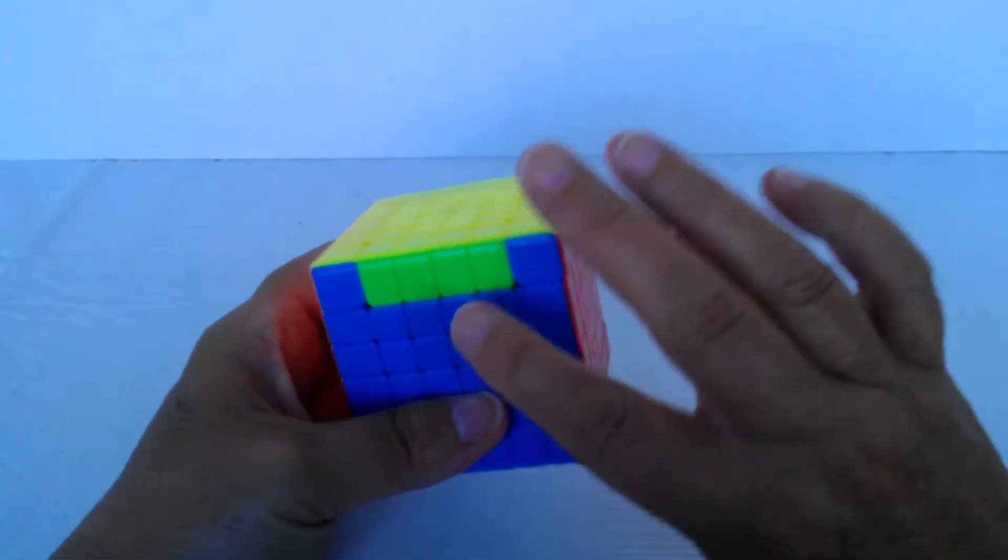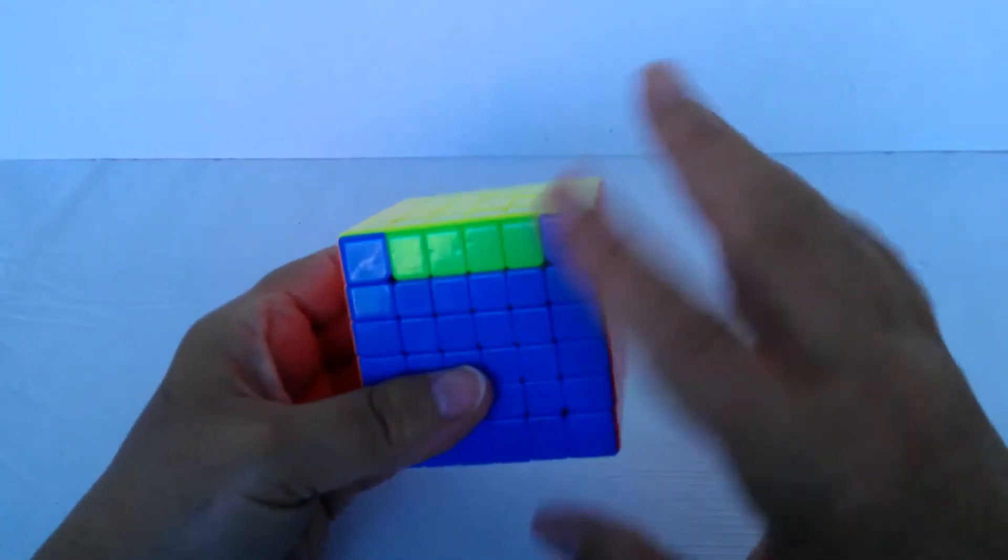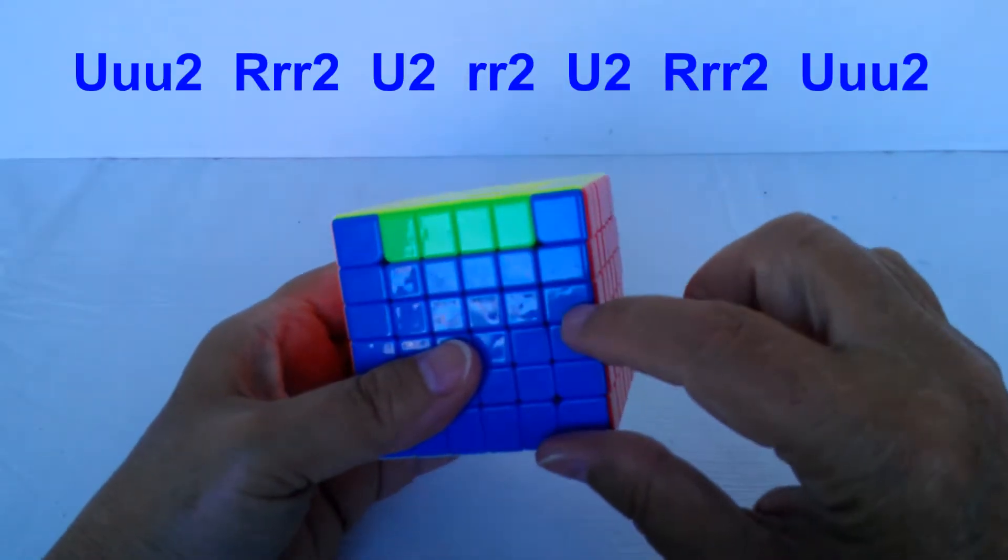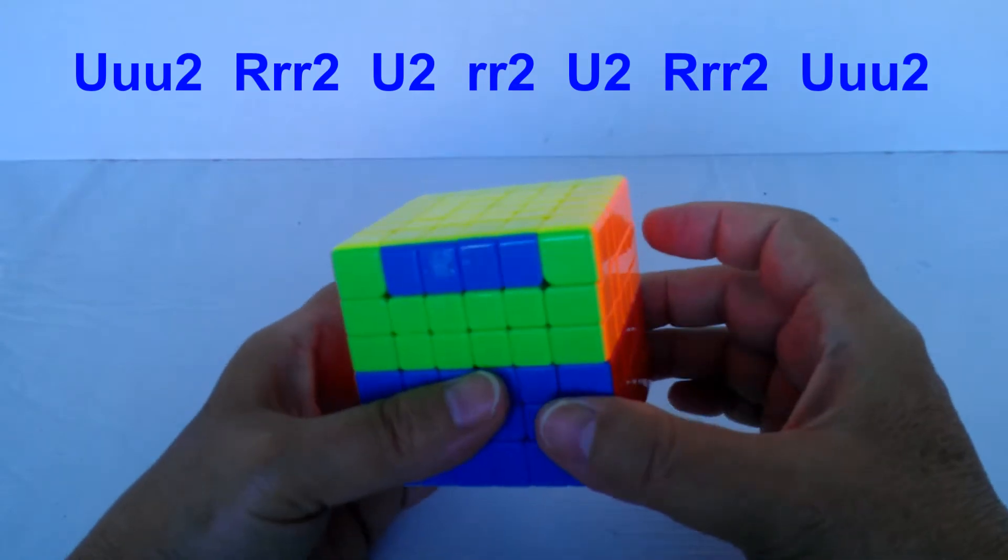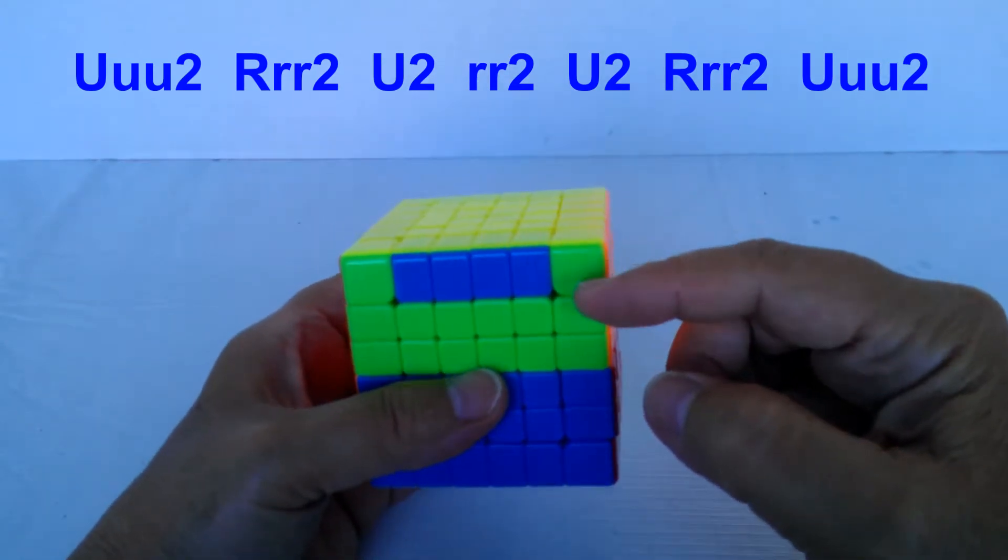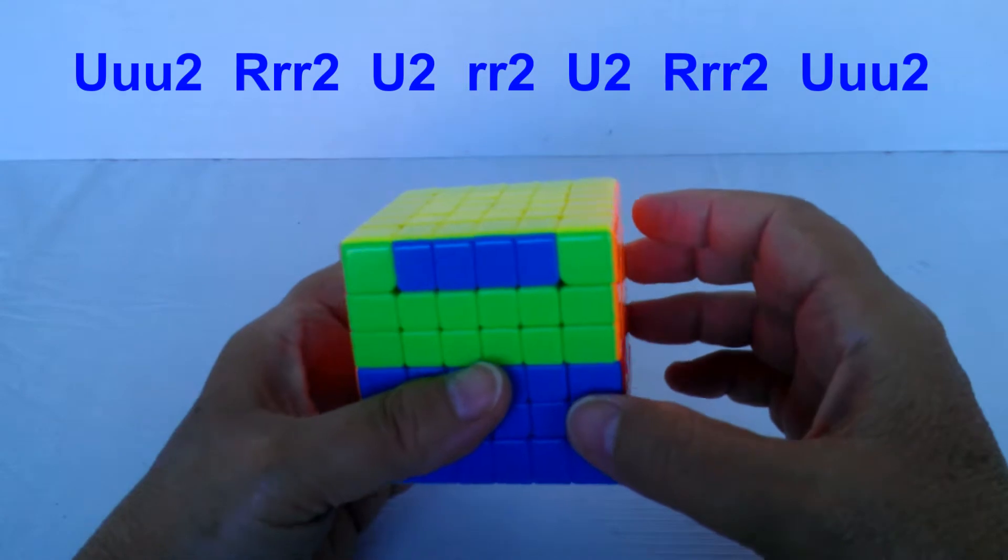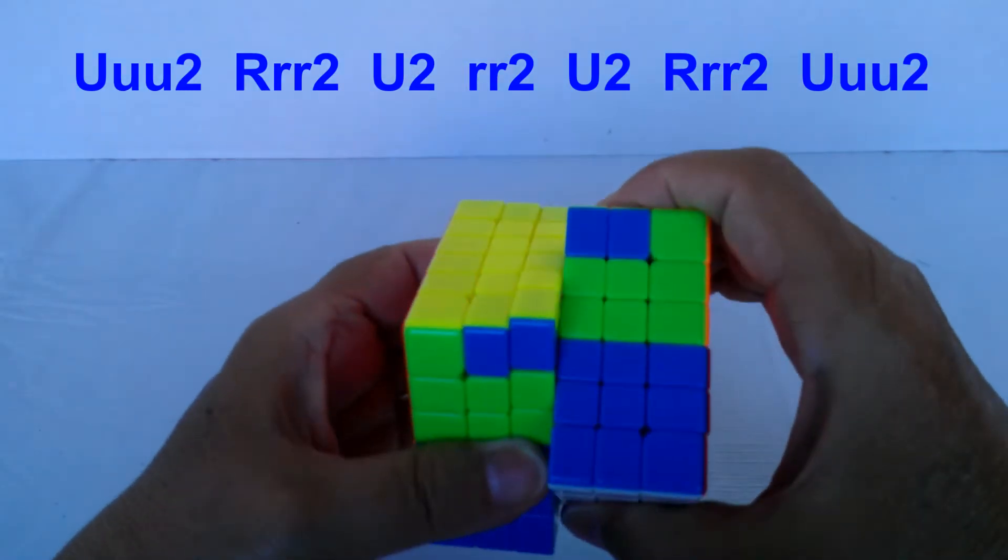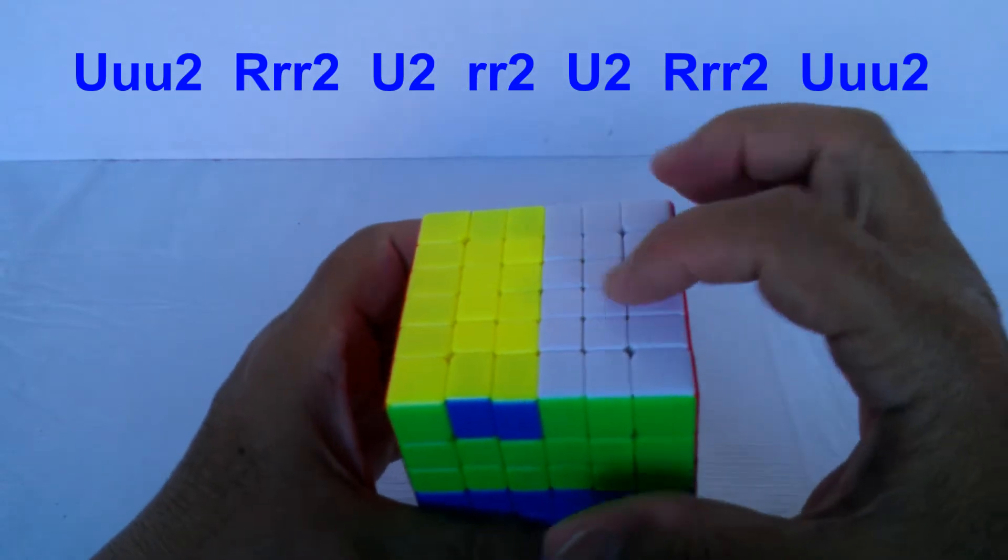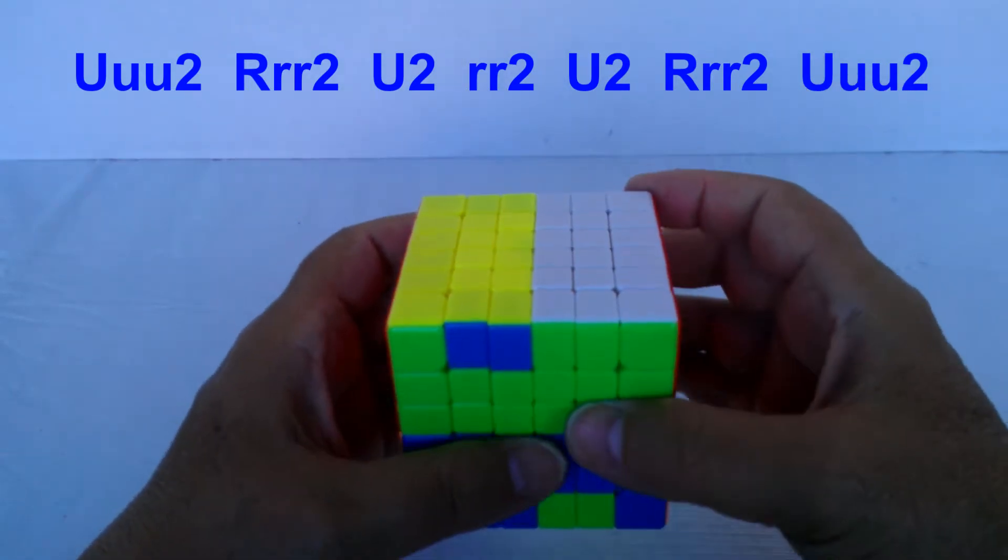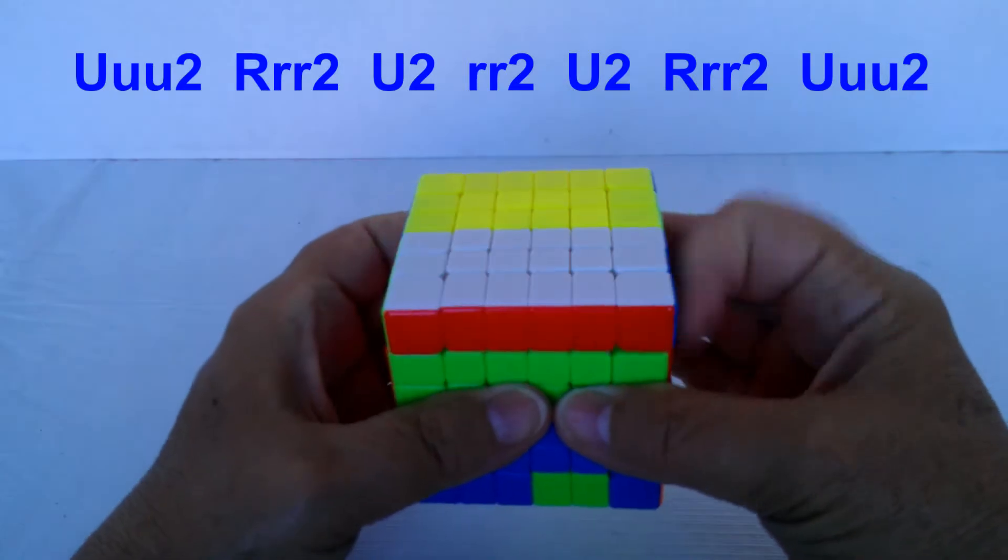So what the algorithm is, having one of the unmatched sides facing you, move all three of these in a U2, I'm not really sure what that's called, U wide, U double wide 2, then an R double wide 2, because you're moving 180 degrees, but all three of these, then a simple U2, so only one layer.